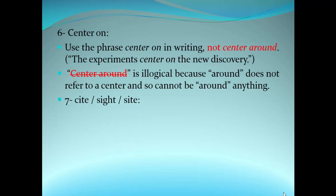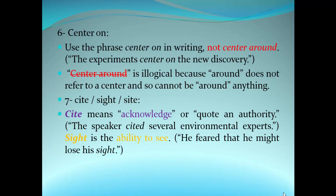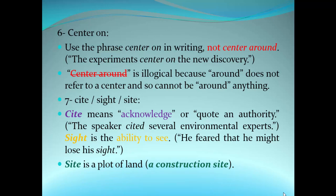'Cite' means to acknowledge or quote an authority — 'The speaker cited several environmental experts.' But 'sight' is the ability to see — 'He feared that he might lose his sight.' The third meaning is a plot of land — 'a construction site.' These are three different words with different meanings.